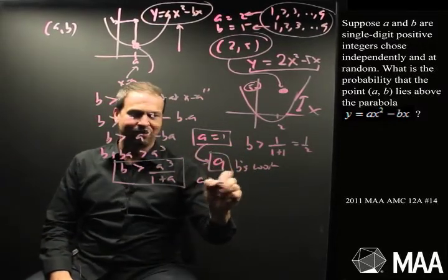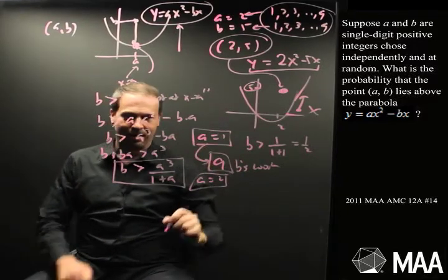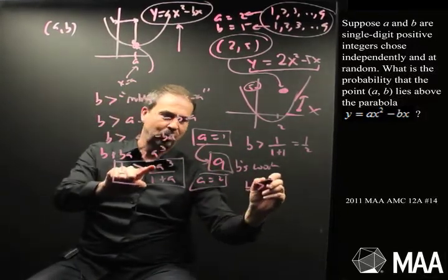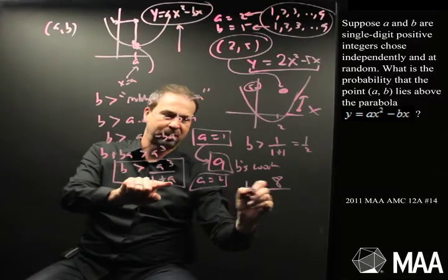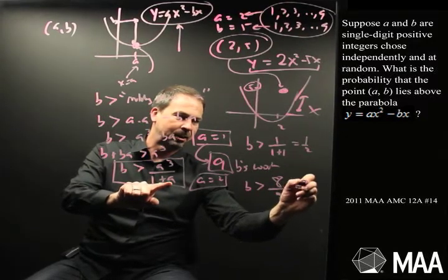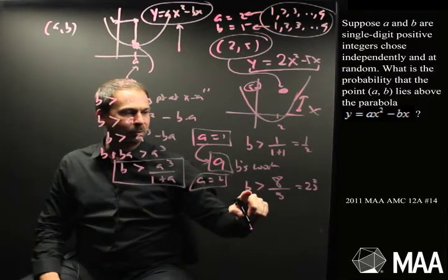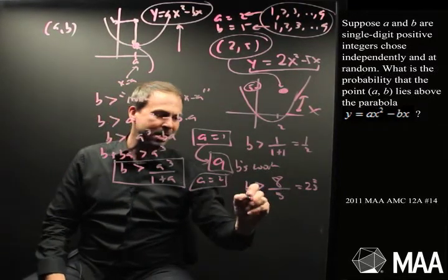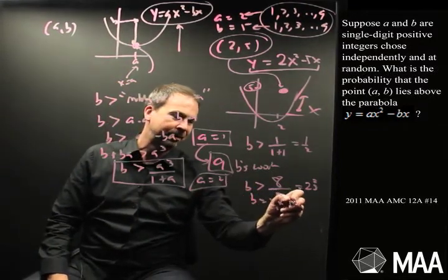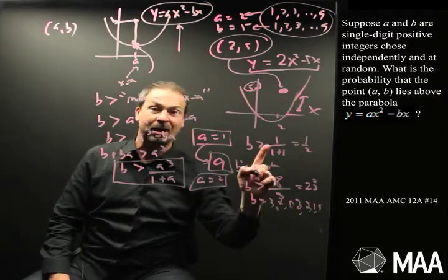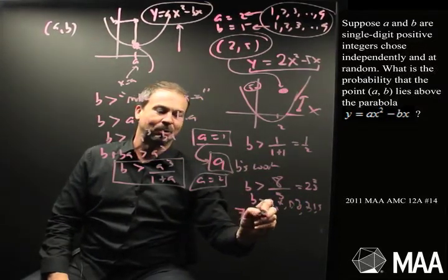Alright, case a equals 2. Let's just push our way through it. b has to be bigger than 2 cubed, 8 over 1 plus 2, that's 3, 8 thirds, that's 2 and 2 thirds. Ooh, not all b's work. b equals 1 doesn't work. b equals 2 doesn't work. But b could be 3, 4, 5, 6, 7, 8, or 9. That's 1, 2, 3, 4, 7 values. 7 values work.